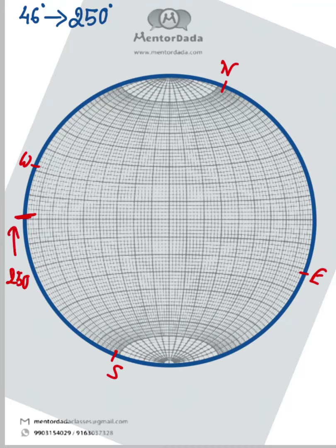Now we will have to go 46 degrees away from the circumference. So this one is 10, this one is 20, this one is 30, this one is 40, and each small gap corresponds to 2 degrees. So 1, 2, 3 - this is the required point.